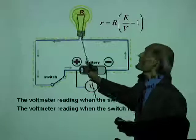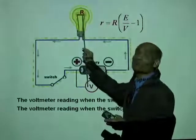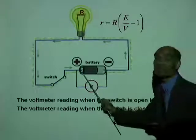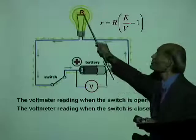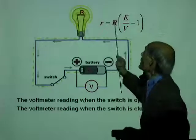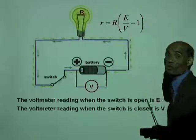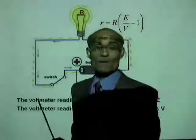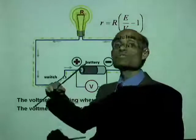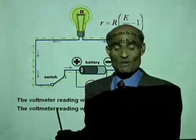In the lab, we use a known resistor in place of the lamp. Having measured EMF E and terminal potential difference V with a known R, we calculate the internal resistance as r = R × (E/V − 1). We will do problems using these concepts and then discuss energy in an electrical circuit in the next part of the lesson.